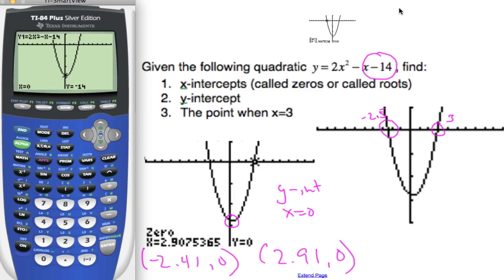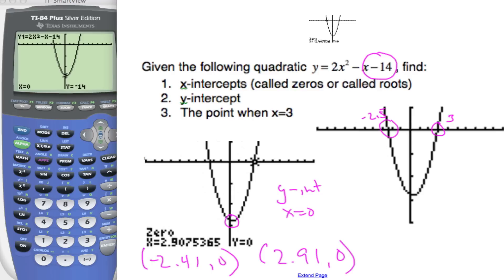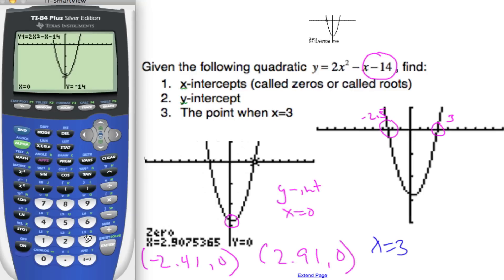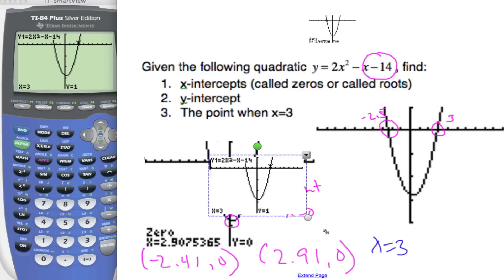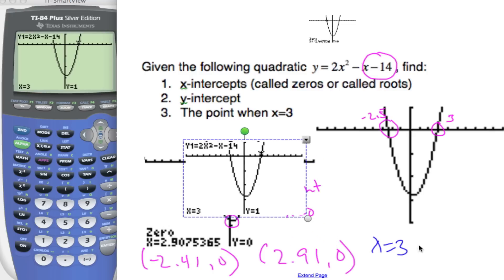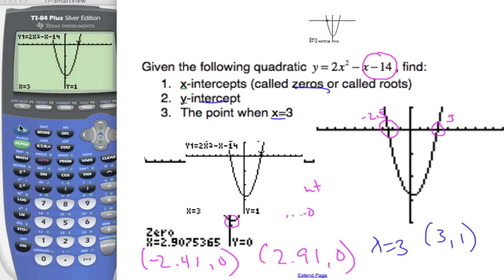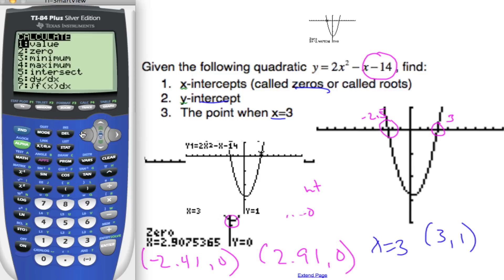And then finally, find the point when x equals 3. When it's on trace mode, I can just type in 3 — it's going to find what y equals when x is 3. Hit enter, and it tells me the y value is 1. So the point is simply (3, 1). Roots, y-intercept, point — they all use this wonderful calculate menu here.